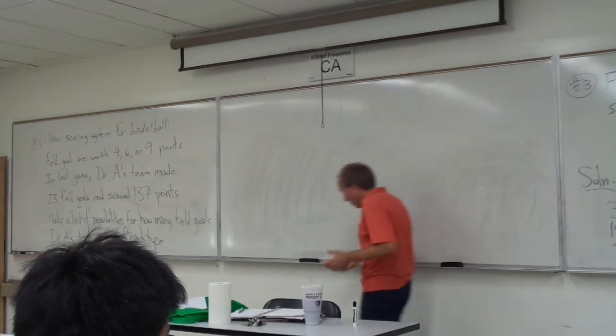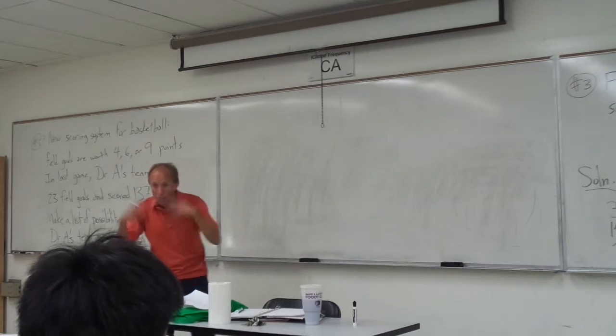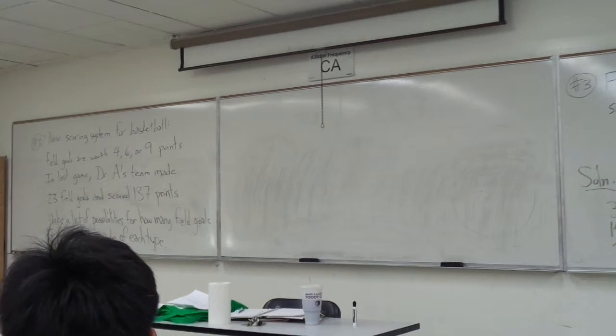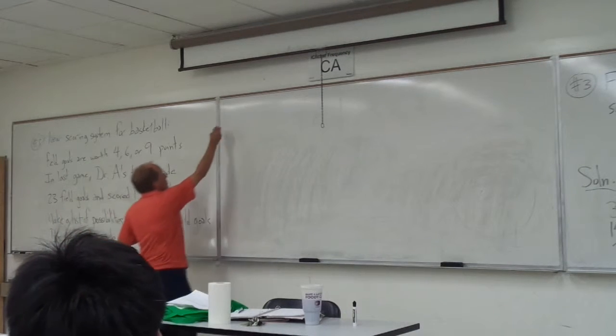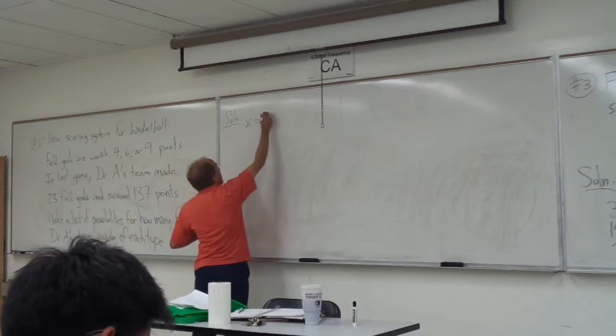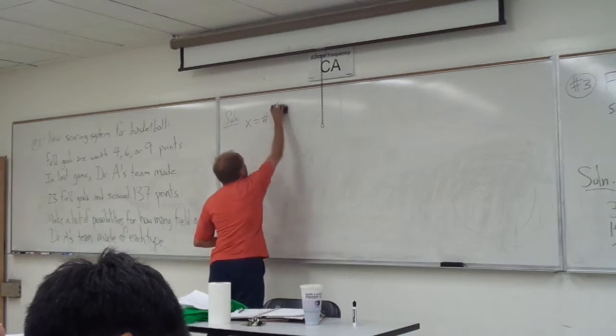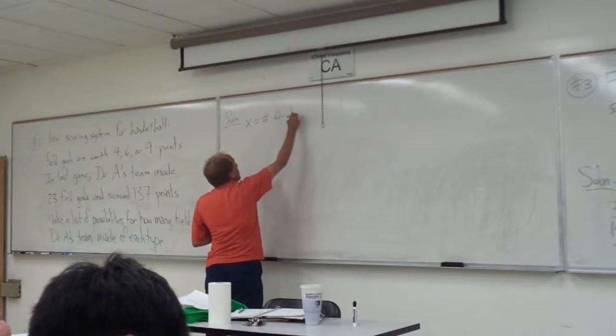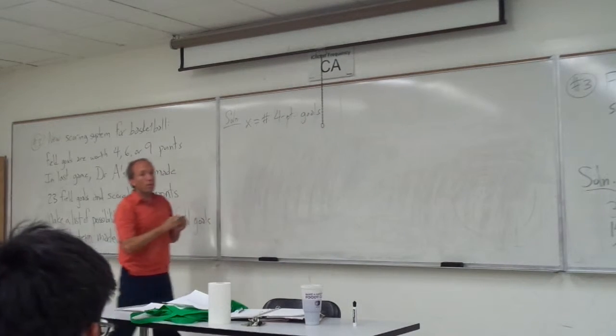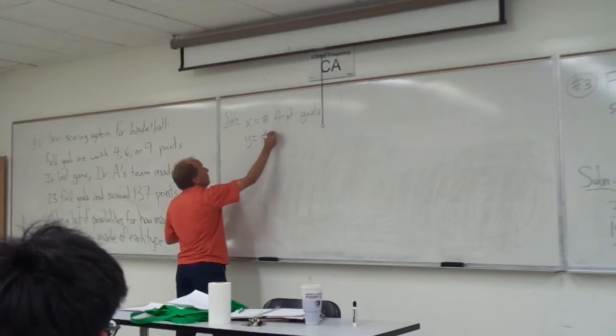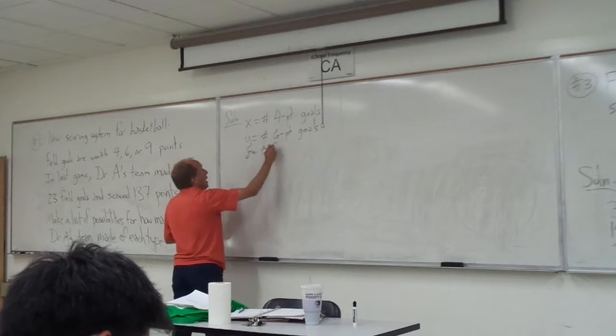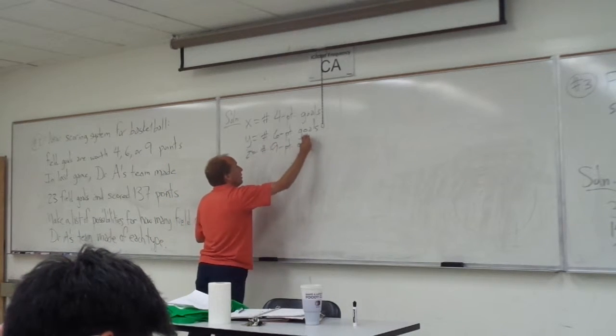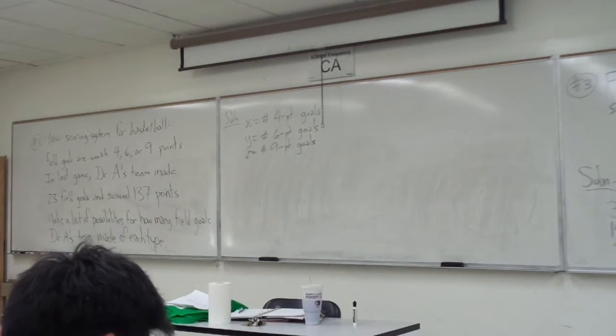Okay, so we need to set up some variables, but what are the variables going to be, like physically, what are they going to represent? Yeah, we have three types of field goals, so we need, like, what variables do you want to use? XYZ. XYZ, good. Okay, so let's do that. So let's let X equal the number of four-point goals, I'm just going to abbreviate it here. X is the four-point goals, and Y will be the number of six-point goals, and Z would be the number of nine-point goals. Okay, so those are the variables.